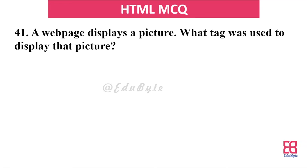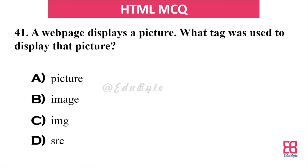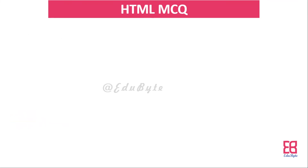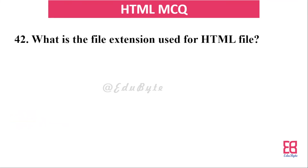Question thirty-seven: which tag attribute is used to display a picture? To display a picture, the correct answer is the src attribute — the `<img src>` attribute is used to specify the image source.